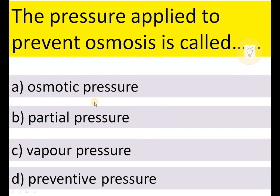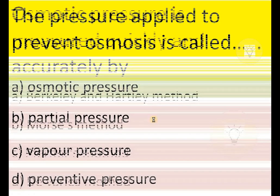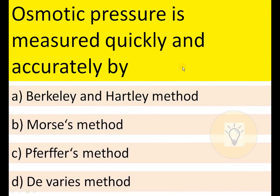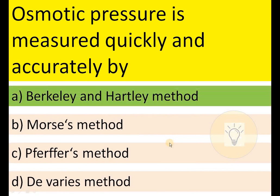The pressure applied to prevent osmosis is called osmotic pressure, partial pressure, vapor pressure, or preventive pressure. The correct answer is osmotic pressure. Osmotic pressure is measured quickly and accurately by the Barclay and Hartley method.